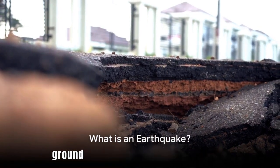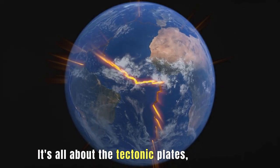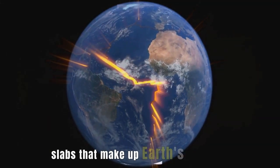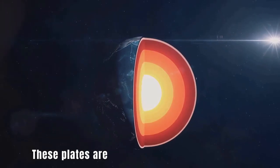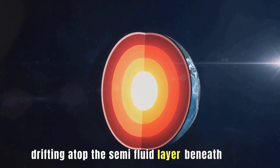Have you ever wondered what causes the ground beneath us to shake violently? It's all about the tectonic plates, vast rocky slabs that make up Earth's outer shell. These plates are always in motion, albeit slow, drifting atop the semi-fluid layer beneath them.